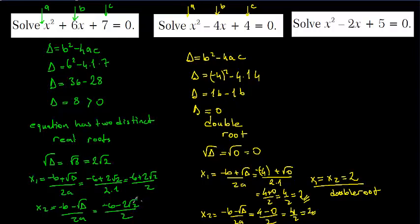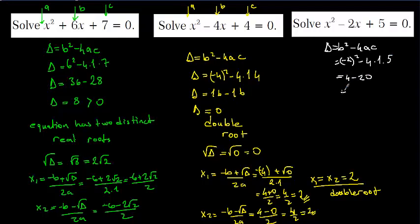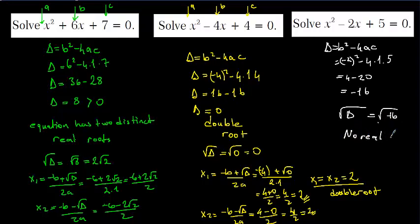For the last equation, delta equals b squared minus 4ac. With a equals 1, b equals minus 2, and c equals 5, we get minus 2 squared minus 4 times 1 times 5, which equals 4 minus 20, and the result is minus 16. The square root of delta would be root of minus 16, which is not a real number. So there is no real solution for this equation.